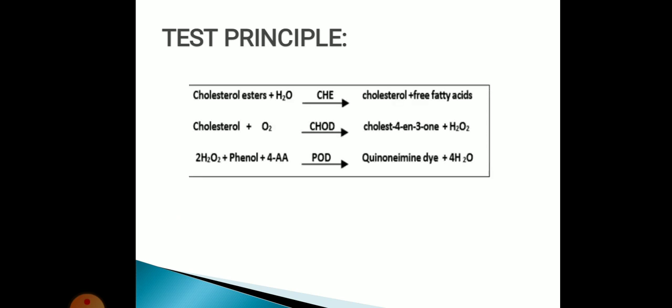Coming to the test principle: cholesterol esterase converts cholesterol ester to free cholesterol and free fatty acid. Free cholesterol in presence of oxygen is converted to cholesterol and hydrogen peroxide by cholesterol oxidase enzyme. Hydrogen peroxide in presence of phenol and 4-amino antipyrin forms pink color by peroxidase.